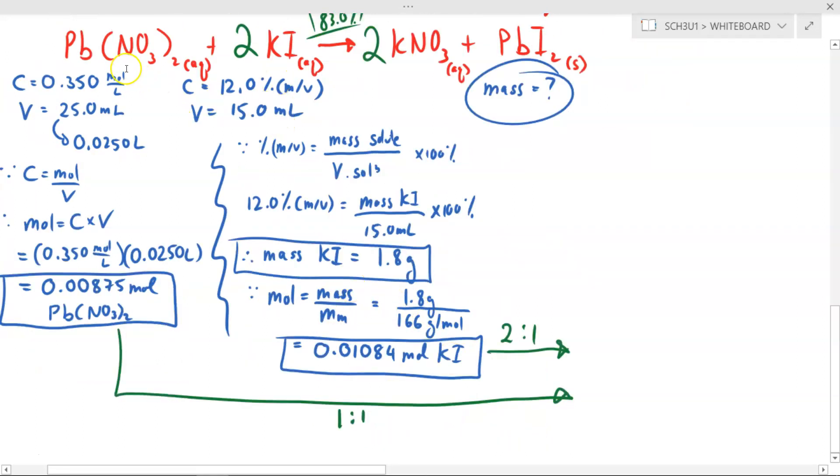Now we need to find out which of these, potassium iodide or the lead-two-nitrate, is going to be my limiting reagent. Using my stoichiometric ratios, I find that potassium iodide can produce 0.00542 moles of lead-two-iodide because it's a 2-to-1 ratio, while lead-two-nitrate can create 0.00875 moles of lead-two-iodide because it's a 1-to-1 ratio. Because potassium iodide produces less product, it is my limiting reagent, while lead-two-nitrate is my excess.